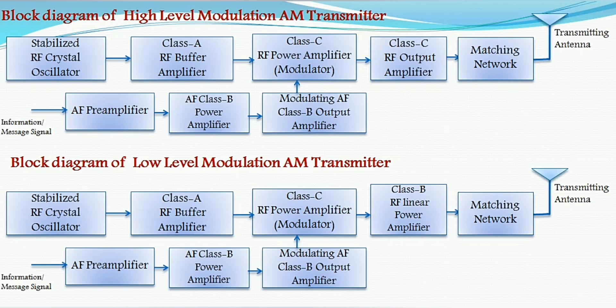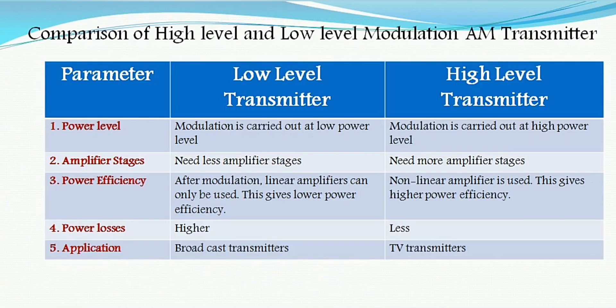Now let us see a comparison between the high level and low level modulation AM transmitters. The first parameter is the power level: in the low level AM transmitter, modulation is done at low power level, whereas in the high level AM transmitter, modulation is done at high power level. For amplifier stages: since amplification is at low power level in low level modulation, it needs fewer amplifier stages, whereas the high level AM transmitter needs multiple amplifier stages to generate a high power signal.